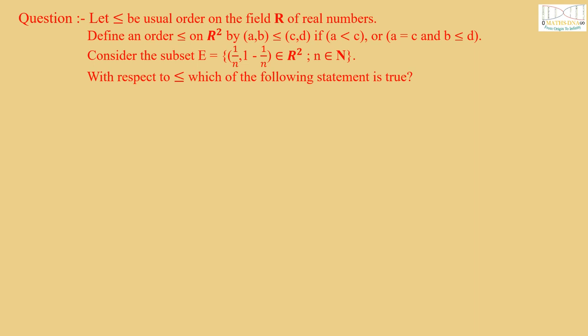Let ≤ be the usual order on the field ℝ of real numbers. Define an order ≤ on ℝ² by (a,b) ≤ (c,d) if a < c, or a = c and b ≤ d. Consider the subset E = {(1/n, 1−1/n) ∈ ℝ² : n ∈ ℕ}. With respect to ≤, which of the following statements is true?